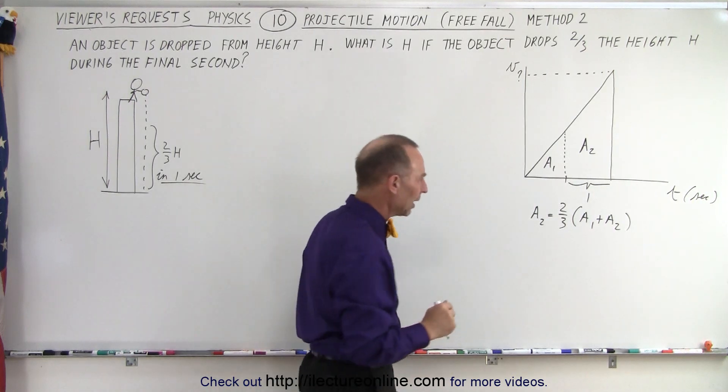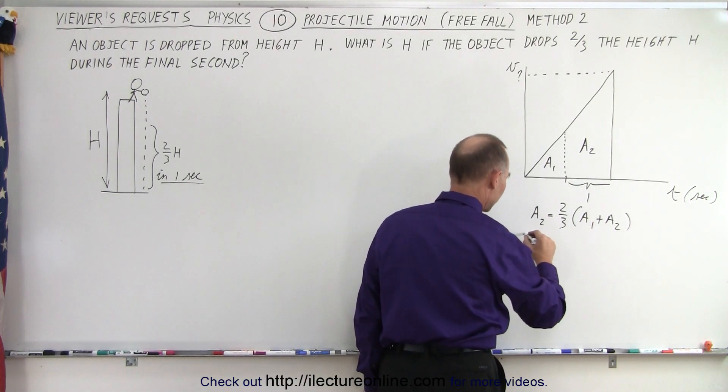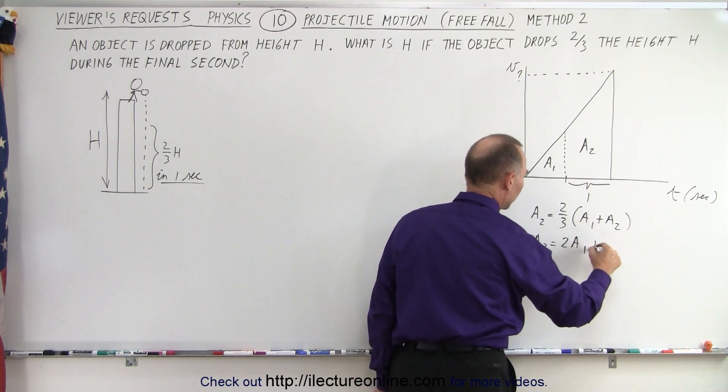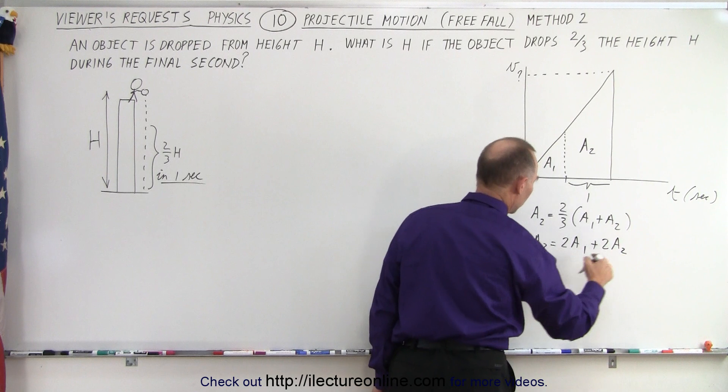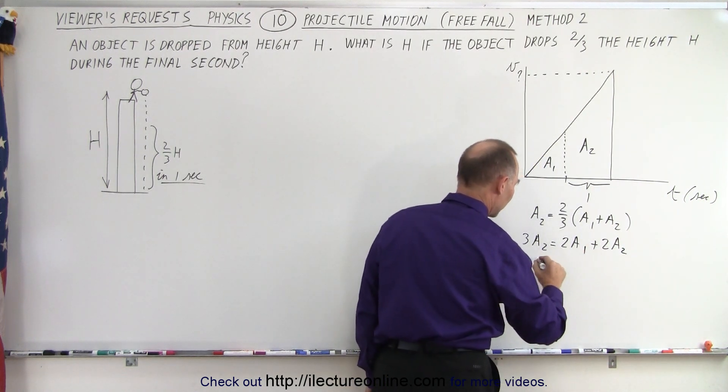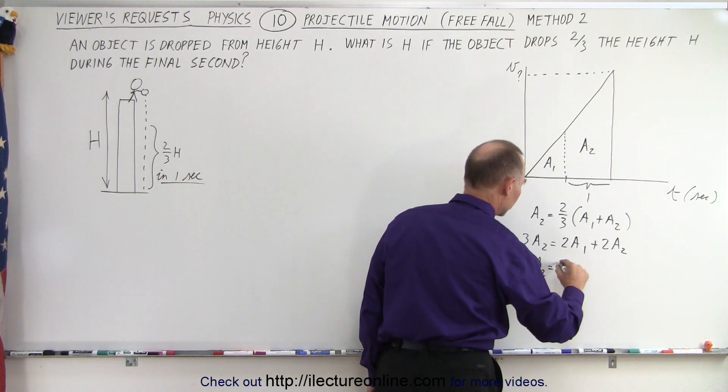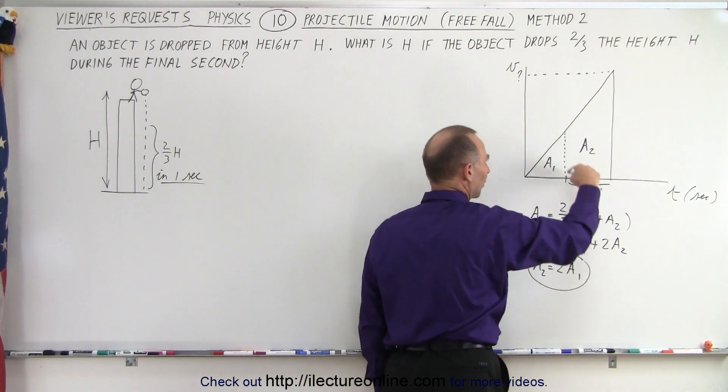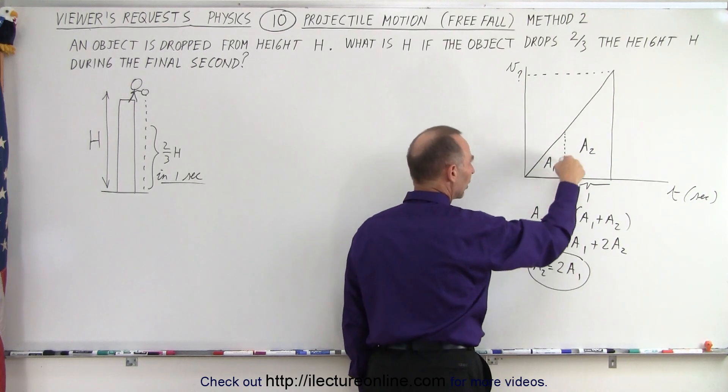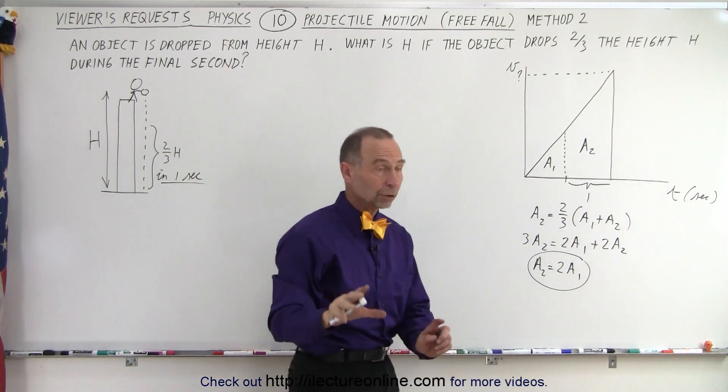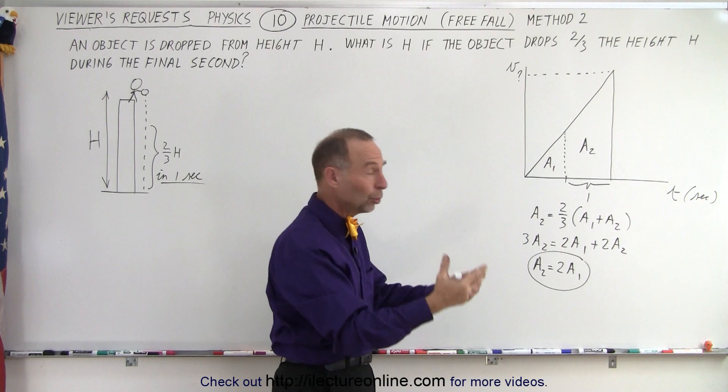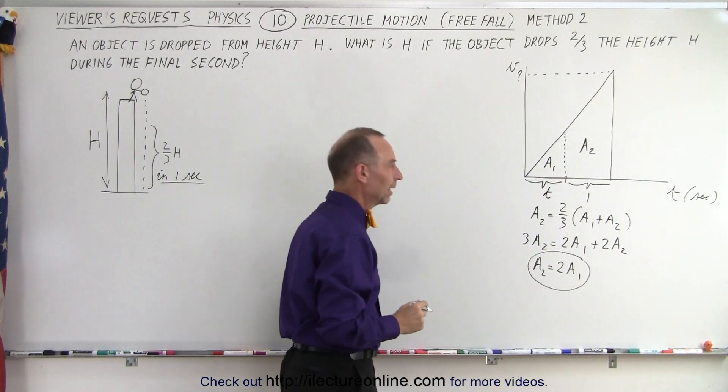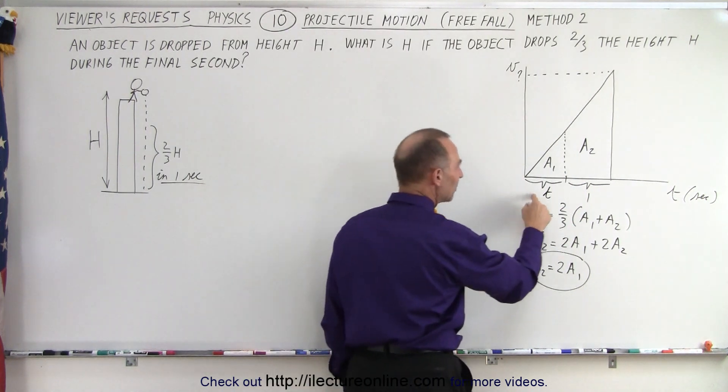So the distance fallen in the last one second, called a2, which is the area underneath the graph here, is two-thirds the total distance, which is the sum of a1 plus a2. Alright, let's work that one out a little bit. First multiply everything by three, we get 3a2 is equal to 2a1 plus 2a2. Subtract 2a2 from both sides, so it gives us a2 is equal to two times a1, which means that the area underneath the curve right here, a2, is twice the area underneath the curve there. Now it may not look that visually, because we don't know the total time. This here, let's call this time t, and so the total time would be t plus one.